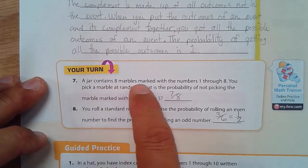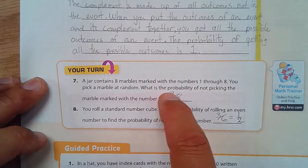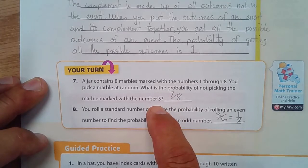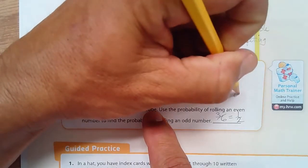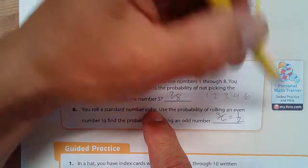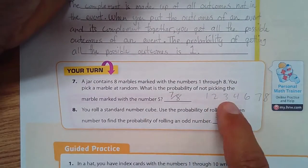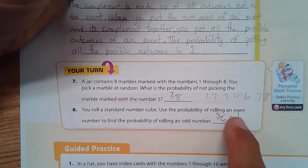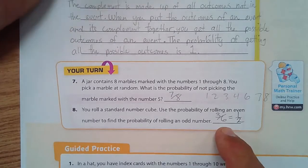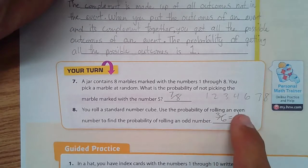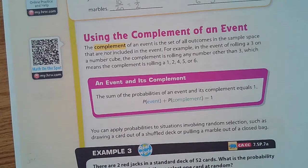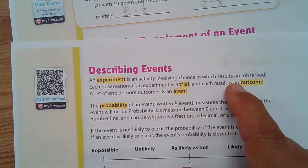Your turn questions: a jar contains eight marbles marked with the numbers one through eight. You pick a marble at random — what is the probability of not picking the marble marked with the number five? The numbers not marked five are one, two, three, four, six, seven, and eight — that's seven out of eight. For rolling a standard number cube: use the probability of rolling an even number to find the probability of rolling an odd number. There are three even numbers out of six, which simplifies to one half — and that's what you need to know about probability, complements, and vocabulary including trial, outcome, and experiment. Thanks for watching.